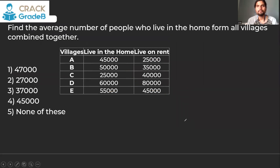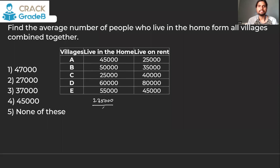Question 4: Find the average number of people who live in home. The home total was already calculated as 2,35,000. Dividing by 5 villages gives an average of 47,000 — option number 1.